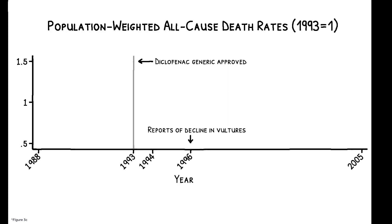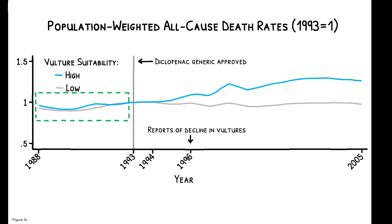This figure gives a first glimpse of the results and plots the raw data on all-cause human death rates for high versus low suitability areas. Both groups initially follow similar trends, but there is a clear break after the introduction of veterinary diclofenac. Mortality increases in high suitability districts, while there is no analogous change in magnitude or trend in low suitability districts.